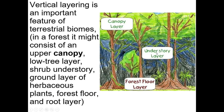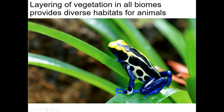Below the canopy is the understory layer, and then there's the forest floor and even below it. There are different ecosystems for different organisms — some organisms spend most of their time up in the trees and may rarely encounter organisms down on the forest floor. The layering of vegetation gives diverse habitats to different animals.